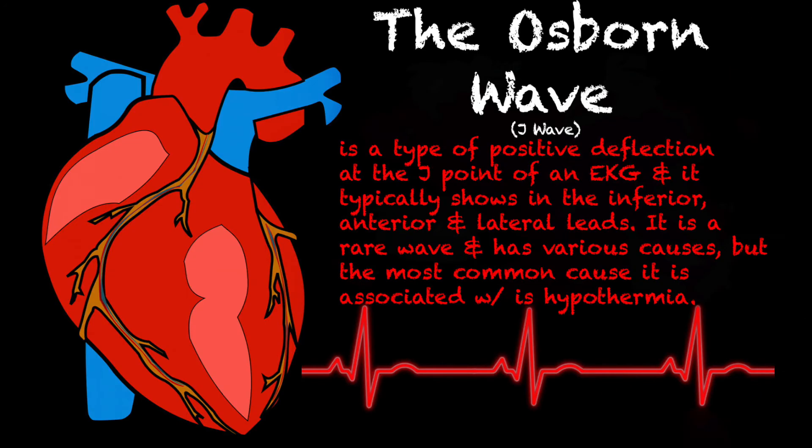The Osborne wave, also referred to as the J, K, or H wave — sometimes even referred to as the camel's hump — is a type of positive deflection at the J point of an EKG, and it typically shows in the inferior, anterior, and lateral leads. It is a rare wave and has various causes, but the most common cause it's associated with is hypothermia.